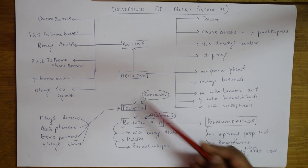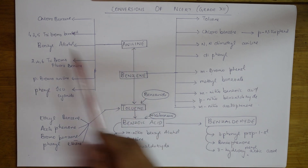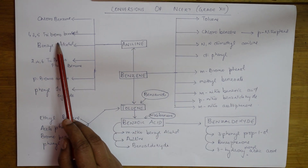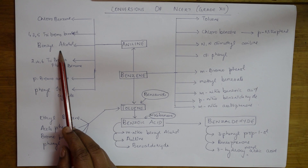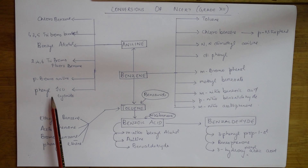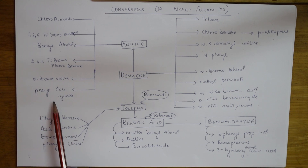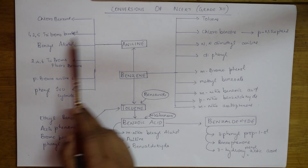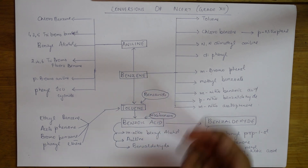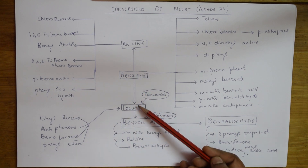You also have to learn the conversion of benzene to aniline, and benzene to toluene. From aniline, there are further conversions: aniline to chlorobenzene, 1,3,5-tribromobenzene, benzyl alcohol, 2,4,6-tribromofluorobenzene, para-bromoaniline, and phenyl isocyanide — which is the carbylamine reaction, also called the isocyanide test. I've picked these up this way so it's easy for you to analyze. All combinations will come under this.